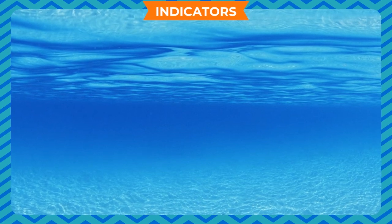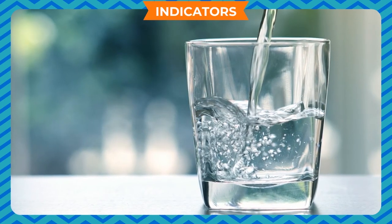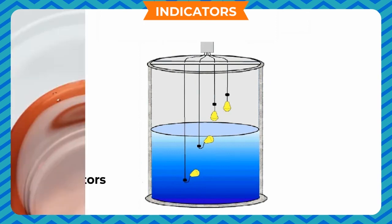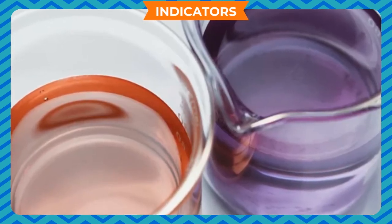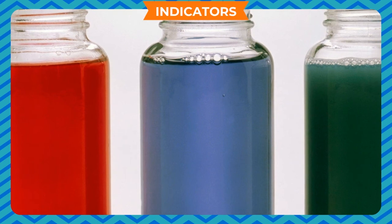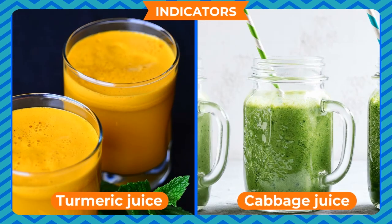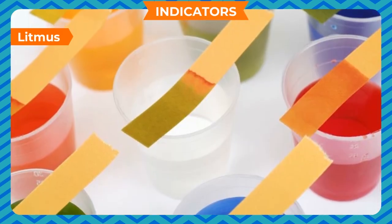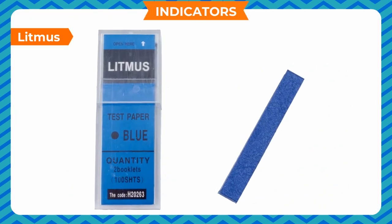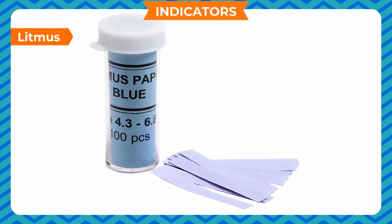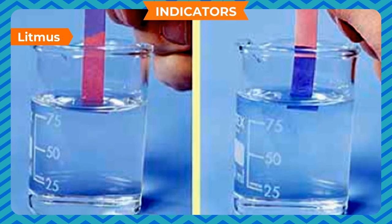Indicators — most acids and bases are colorless liquids, just like clear water. To know whether a substance is acidic or basic, we use special substances called indicators. An indicator is a substance that changes color in acids and bases. Indicators may be natural (e.g., turmeric, cabbage juice) or chemical (e.g., methyl orange, phenolphthalein). The most commonly used natural indicator is litmus, extracted from lichens. It has a purple color in distilled water. When added to an acid solution it turns red, and when added to a basic solution it turns blue.